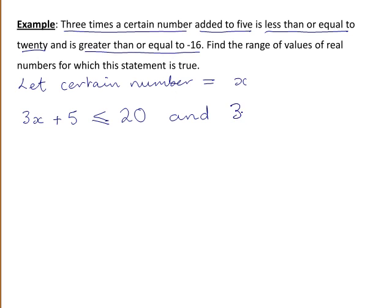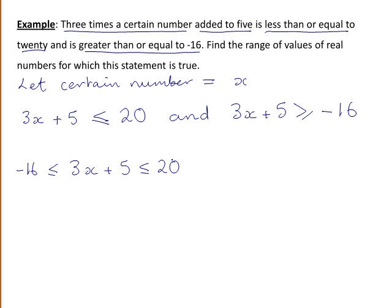And 3x plus 5 is greater than or equal to minus 16. As shown in a previous video, we can write this combined inequality statement without using the word 'and' between the two inequalities. So 3x plus 5 is a value between minus 16 and 20, including minus 16 and 20.